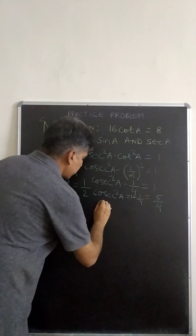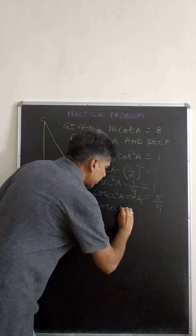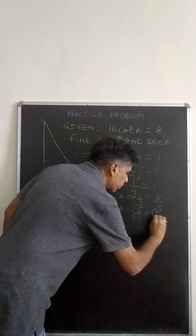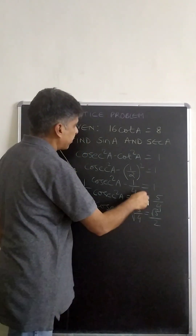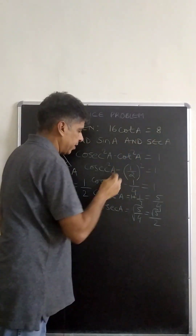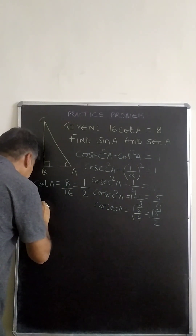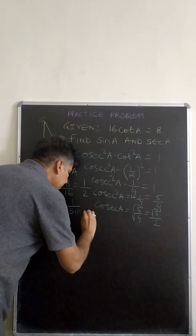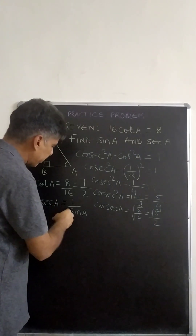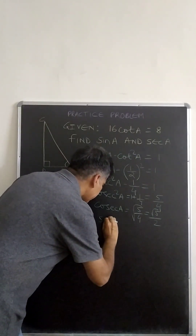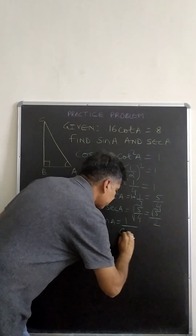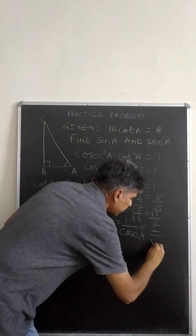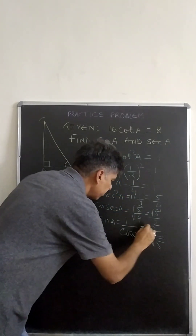So cosec A equals the square root of 5 upon 4, that is root 5 upon 2. This is the value for cosec A. Now, since cosec A equals 1 upon sin A, that means sin A equals 1 upon cosec A, which comes out to be the reciprocal: 2 upon root 5. This is the answer for sin A.